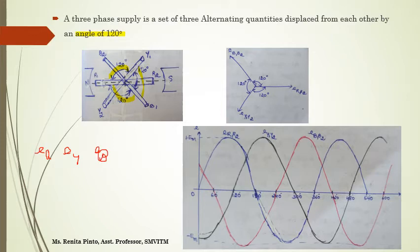You can see this graph of three-phase voltages. ER1R2 is the voltage of the R coil, EY1Y2 is the voltage by the Y coil, and EB1B2 is the voltage by the B coil. Instead of writing R1-R2, I will just write it as R; Y1-Y2 as Y; and B1-B2 collectively as B. So these are the three independent voltages induced in the coils.